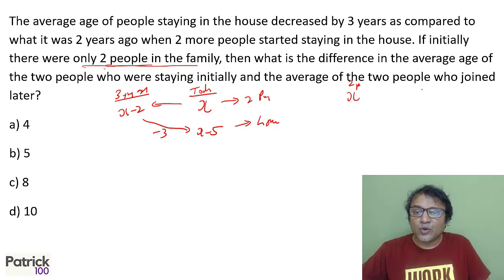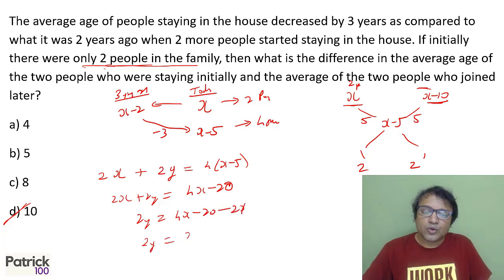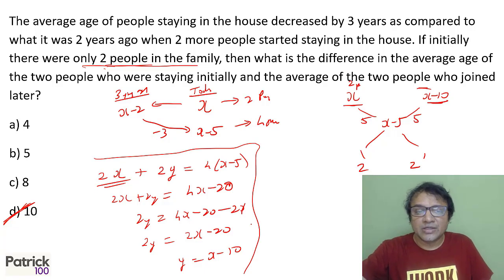You can do reverse allegation: since the number of people is 2:2 or 1:1, if this difference is 5, the other difference is also 5, giving X minus 10 for the new people. The difference in average is 10. Alternatively, solve by equation: 2X plus 2Y equals 4 times X minus 5, giving 2Y equals 2X minus 20, so Y equals X minus 10.